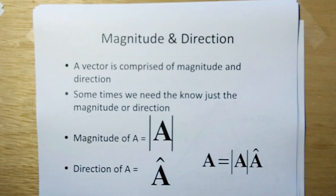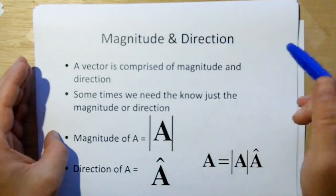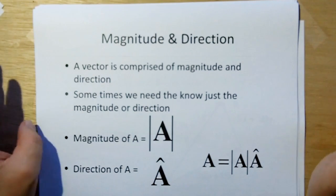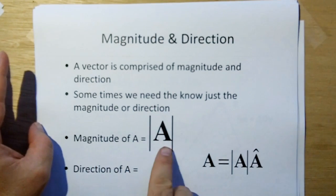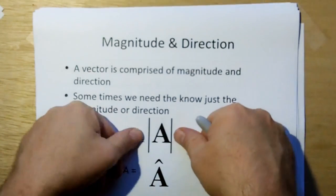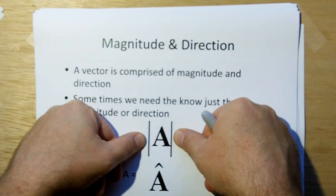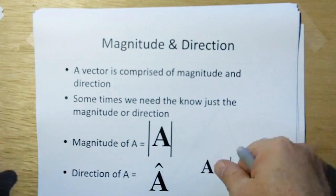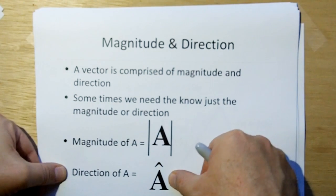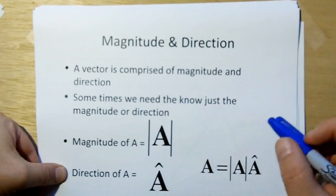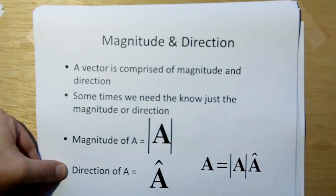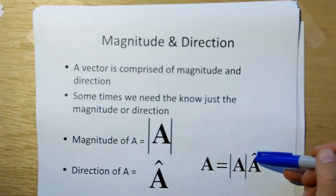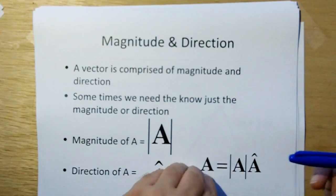This is a recap of magnitude and direction. A vector is comprised of a magnitude and direction. Sometimes we need to know just the magnitude or direction, and we represent the magnitude of A with the absolute value brackets around it. That would be just the length of the vector A. And when we want to know the direction, we represent that as A with the caret on the top. That means we just want the direction of the vector A. And again, to get back to A, you multiply the direction times the magnitude to get back to A.